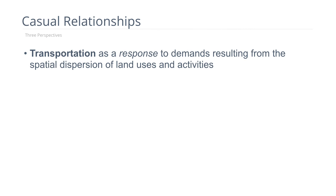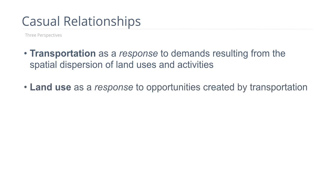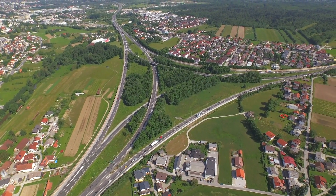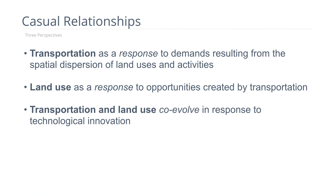In this class, we'll investigate the causal relationships between land use and transportation systems and review the different views on the subject. One is that transportation is a response to demands that result from the spatial dispersion of activities. A second view is that land use is a response to opportunities created by transportation systems, such as the development of the interstate highway system enabling the development of residential suburbs. A third view is that transportation and land use co-evolve in response to technological innovation, and we'll trace the transition of new technology in transportation and how it affected transportation and land use.